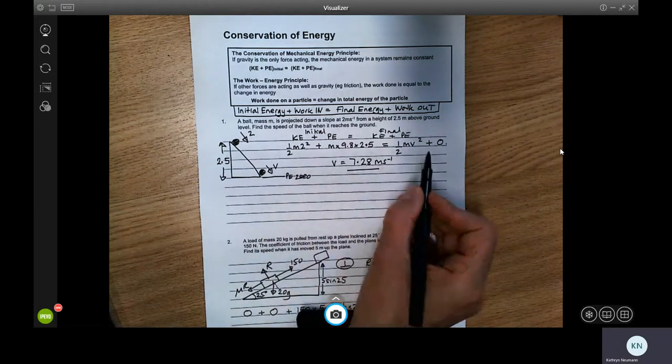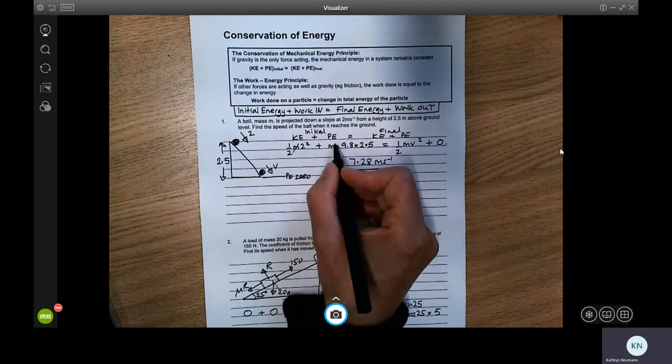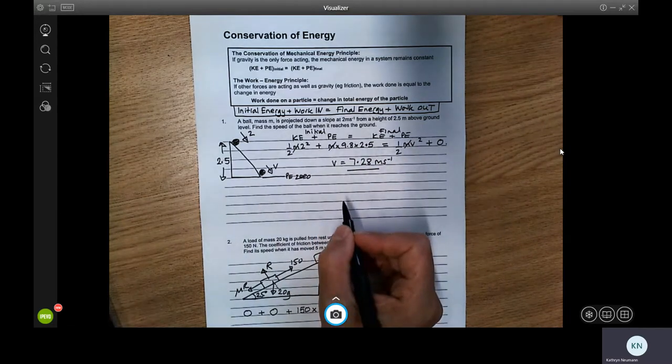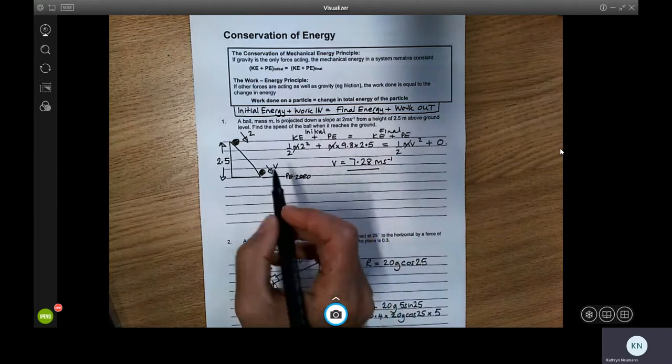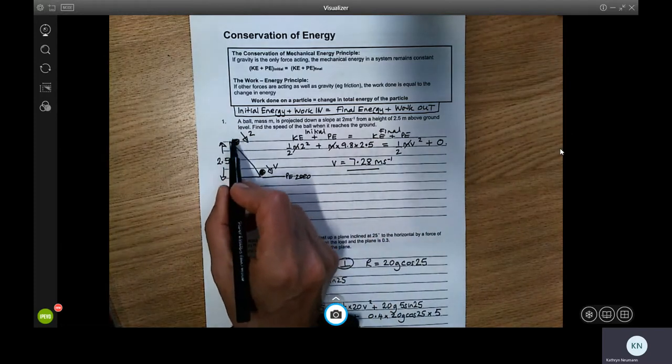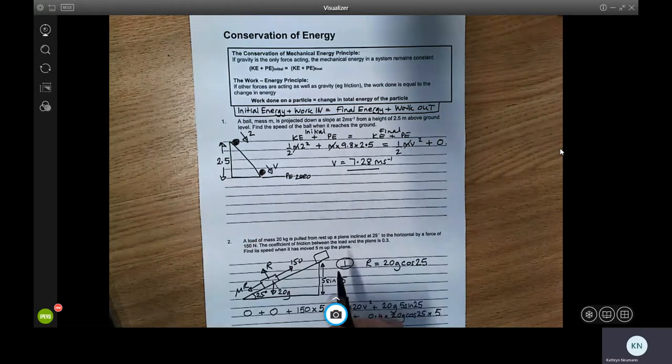This is v plus zero because we've got PE zero at the bottom of the slope. So working these calculations out, cancelling all the way through by m, we get that v is 7.28. So this is a fairly straightforward situation where the kinetic energy and potential energy at the beginning is transferred to kinetic energy at the end.